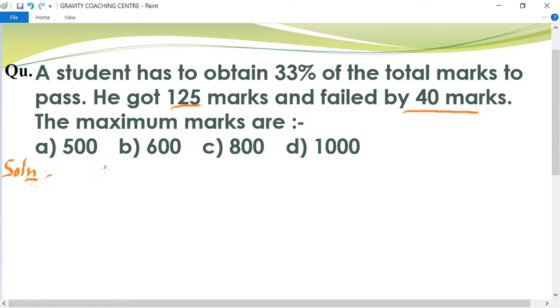First, let's find the passing marks. Since this student has 125 marks and failed by 40 marks, the total passing marks is 125 + 40 = 165. So the passing marks are 165, which represents 33% of the total marks.